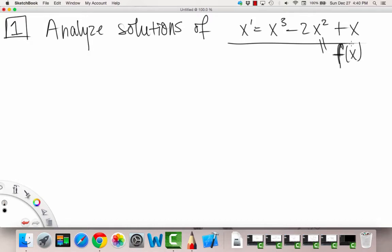which is the thing that we want to analyze, right? The solutions. Okay, so the first thing that we're going to do is try to graph this f of x. So in doing so, we're just going to factor out some things. So like an x, for example. So we're left behind with x squared minus 2x plus 1. And we can factor this further into x times x minus 1 quantity squared, right?